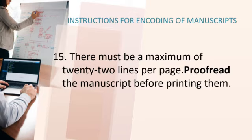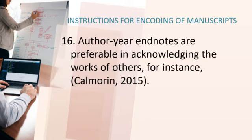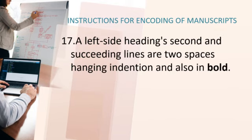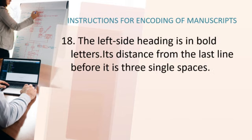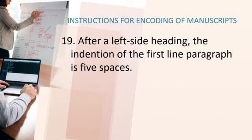Number 15, there must be a maximum of 22 lines per page. Proofread the manuscript before printing. Number 16, author, year, and notes are preferable in acknowledging the works of others — for instance, Calmarine in 2015. Number 17, a left side heading's 2nd and succeeding lines are 2 spaces hanging indention and also in bold. Number 18, its distance from the last line before it is 3 single spaces. Number 19, after a left side heading, the indention of the first line of a paragraph is 5 spaces.